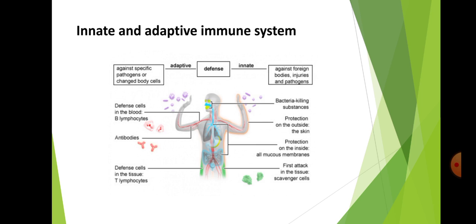Innate immunity is present at birth while adaptive immunity develops over the lifespan of the individual. The figure of innate and adaptive immune system shows: for adaptive defense against specific pathogens or changed body cells, there are defense cells in the blood — B lymphocytes producing antibodies — and defense cells in the tissues — T lymphocytes. For innate defense against foreign bodies, injuries, and pathogens, there are bacteria-killing substances, skin as protection on the outside, mucous membranes as protection on the inside, and scavenger cells for the first attacks in tissues.